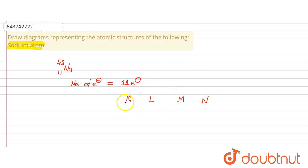K shell contains maximum 2 electrons, L shell contains maximum 8 electrons, so 1 electron is present in M shell and 0 electrons present in N shell. So here, draw the structure of sodium according to the atomic model.